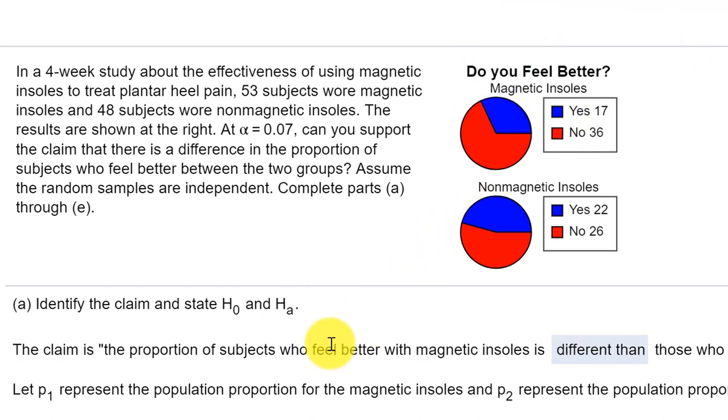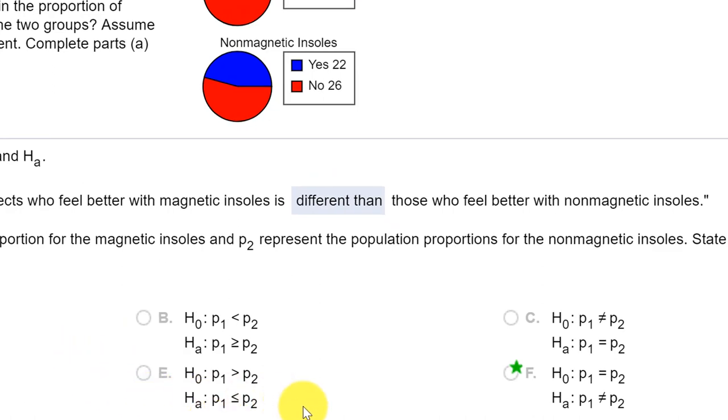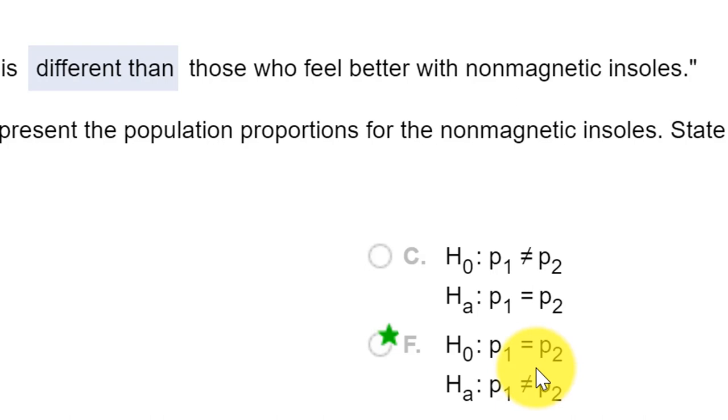First thing we have to do, identify the null and alternative. Here it says, can you support the claim there is a difference? If there's a difference, that means that the two proportions are not equal. So the proportions of the two groups are different. And if we look at the options there, we will find over here that proportion one equals proportion two, and the claim is that the two proportions are not equal.